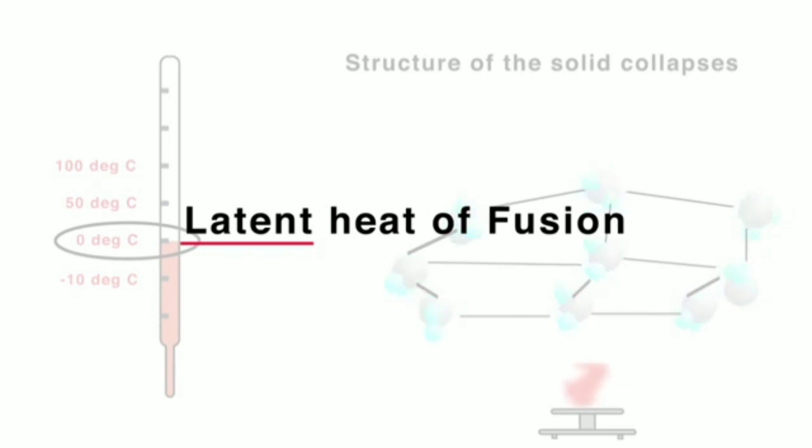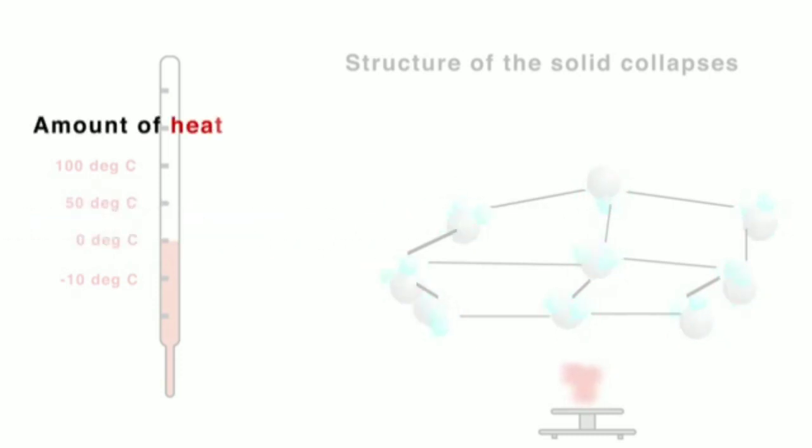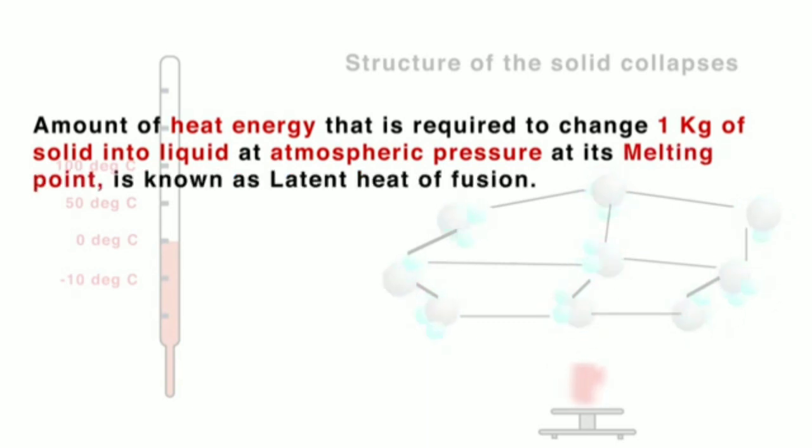The exact definition of latent heat of fusion is as follows: The amount of heat energy that is required to change one kilogram of solid into liquid at atmospheric pressure at its melting point is known as latent heat of fusion. Can you now define latent heat of vaporization?